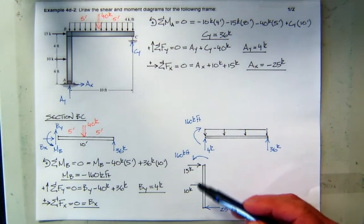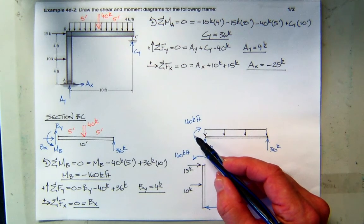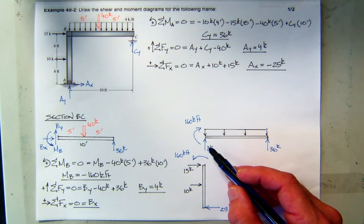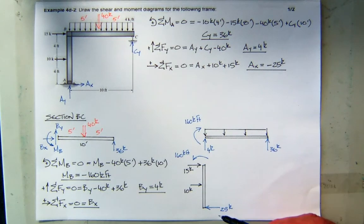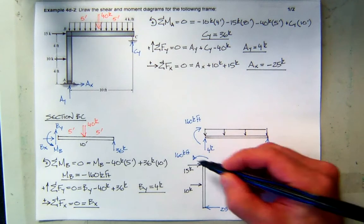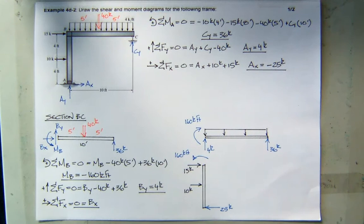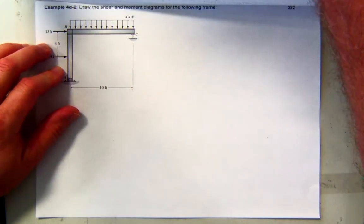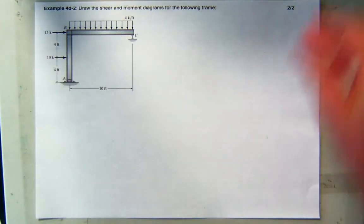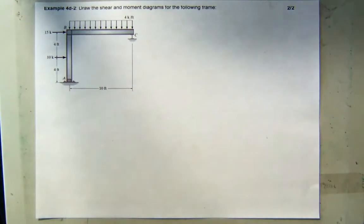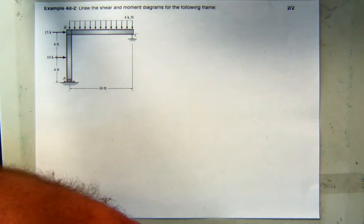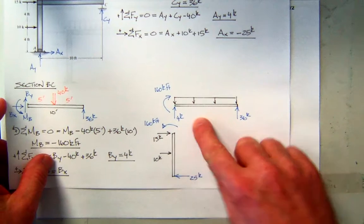Let's talk about sign conventions before we proceed. On BC, the bending moment is positive and the shear from the 4-kip force is negative since it goes back to zero. On AB, the 25-kip force creates positive shear. Remember, we're always going to assume the outside is the positive side. We'll draw AB rotated, and BC in its standard orientation.